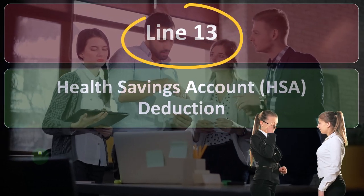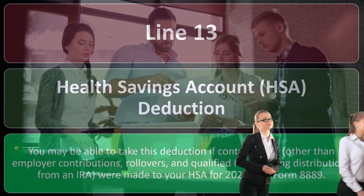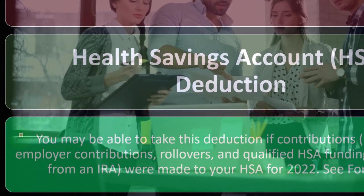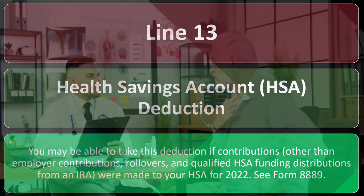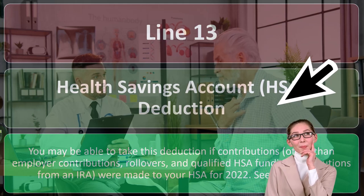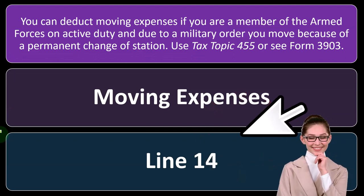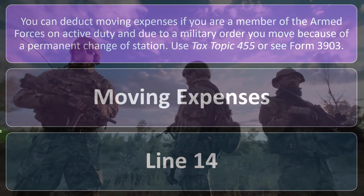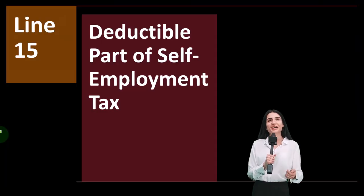Line 13: the health savings account HSA deduction. You may be able to take this deduction if contributions other than employer contributions, rollovers, and qualified HSA funding distributions from an IRA were made to your HSA for 2022. For more detail, use Form 8889. Line 14: moving expenses. You can deduct moving expenses if you are a member of the armed forces on active duty and due to military order you move because of a permanent change of station. See Tax Topic 455 or Form 3903 for more detail.